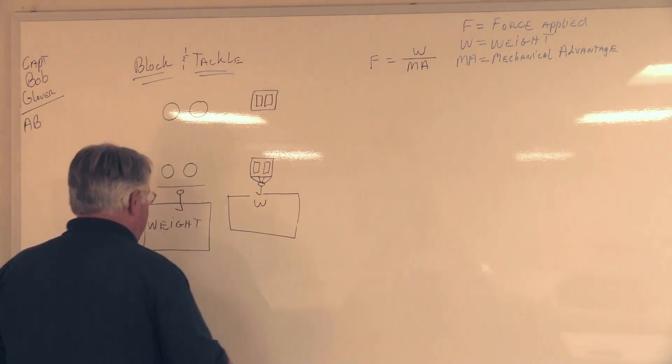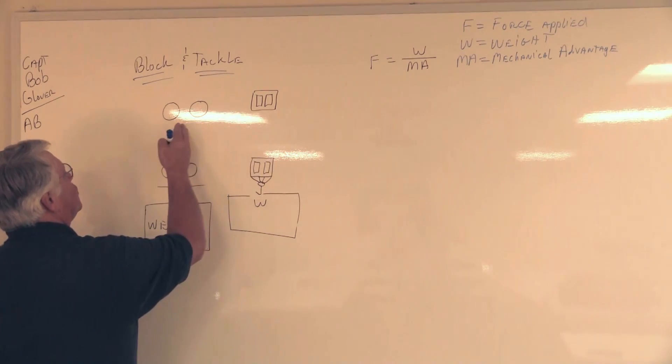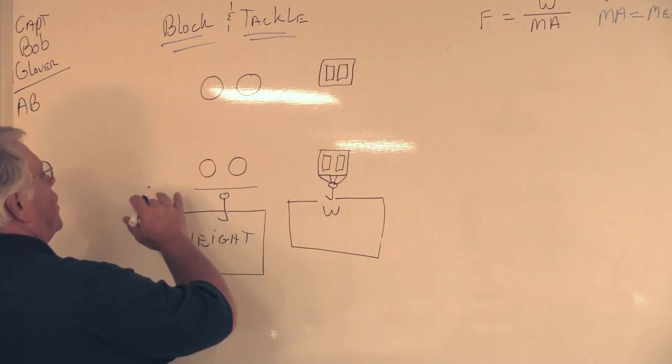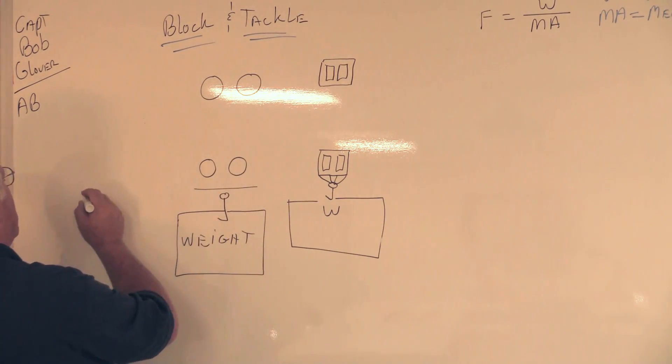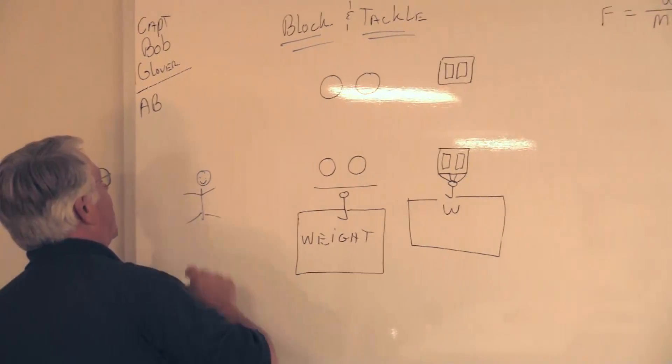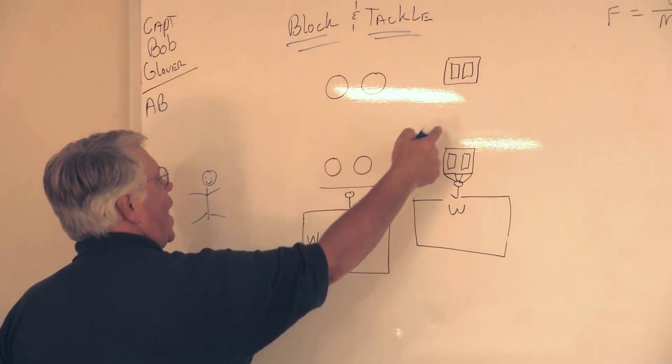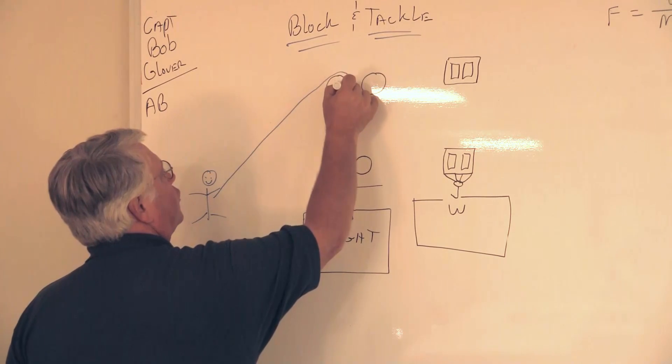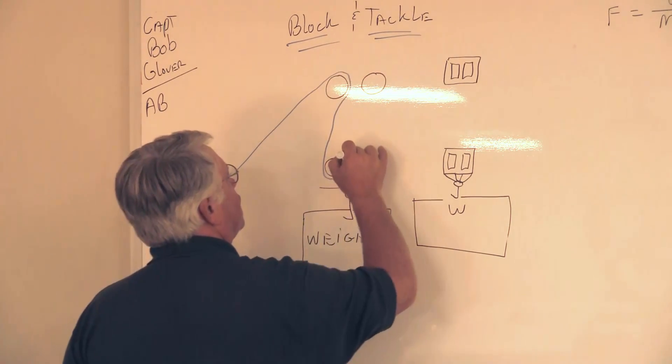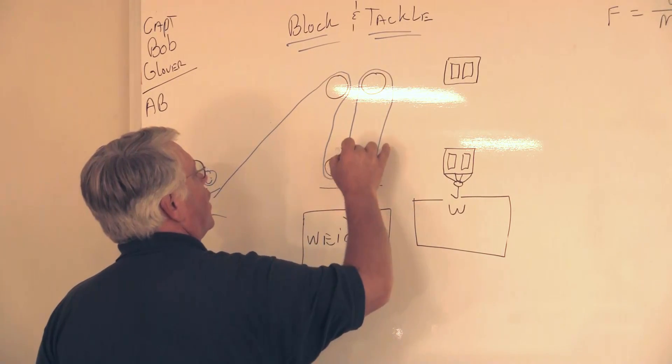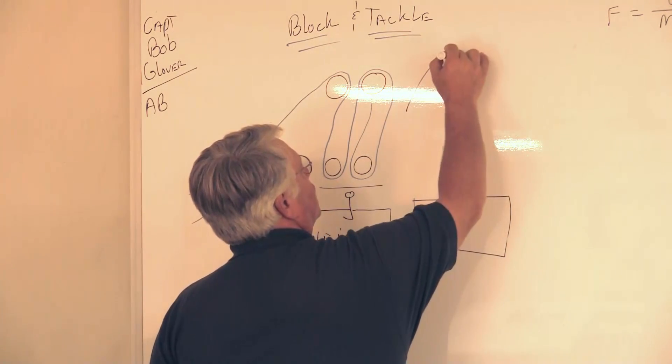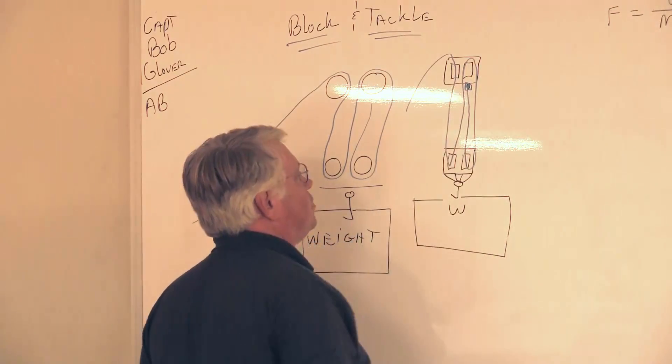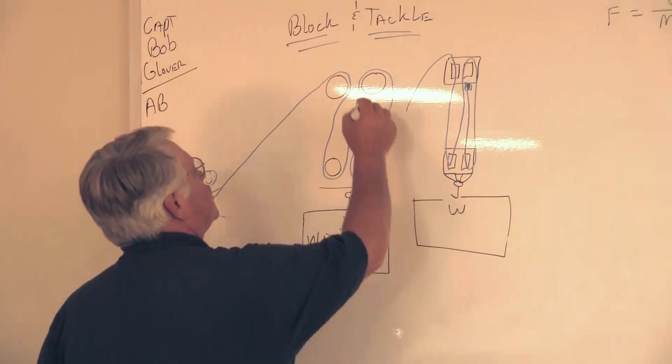In order to make this easier, I draw it out this way on the board where I have the actual shivs. This way, when I draw the line in, it makes it easier to see how many parts of the falls I have and the mechanical advantage. So we have our stick figure, and that's us. We're pulling on this block and tackle system. This line represents the line we're pulling on, going up through that shiv, down and around through the next shiv, up and over the next shiv, and then made off on the becket.